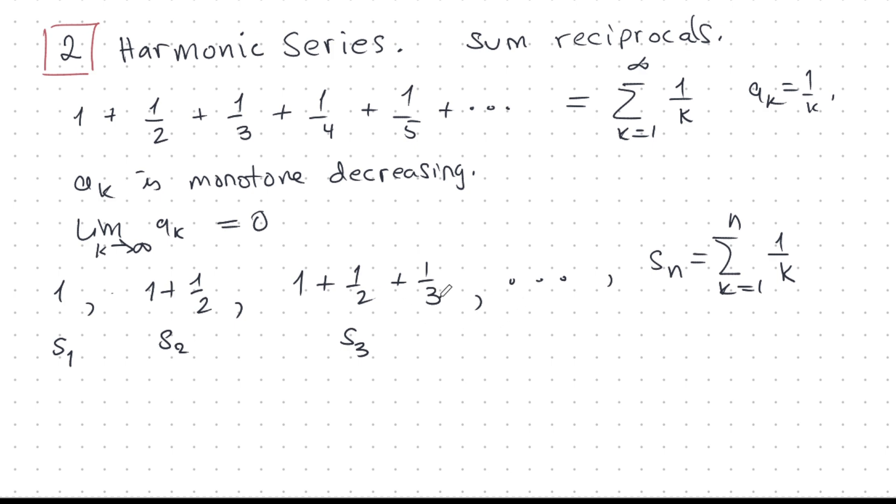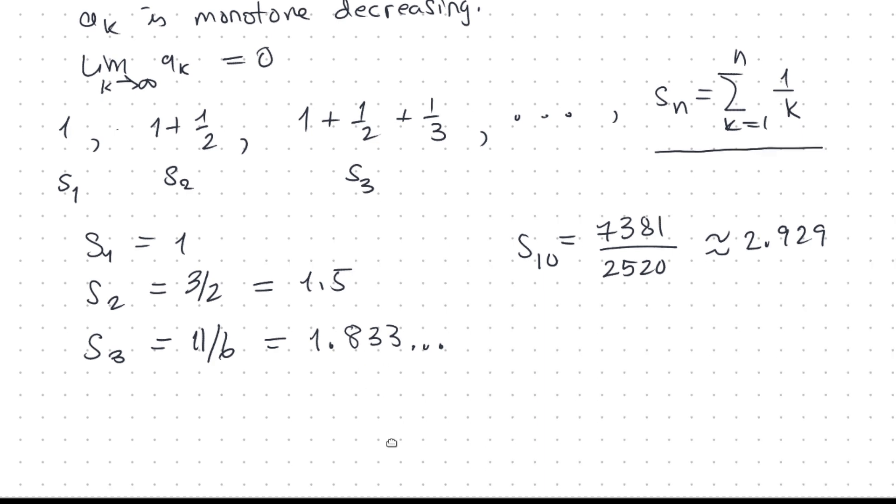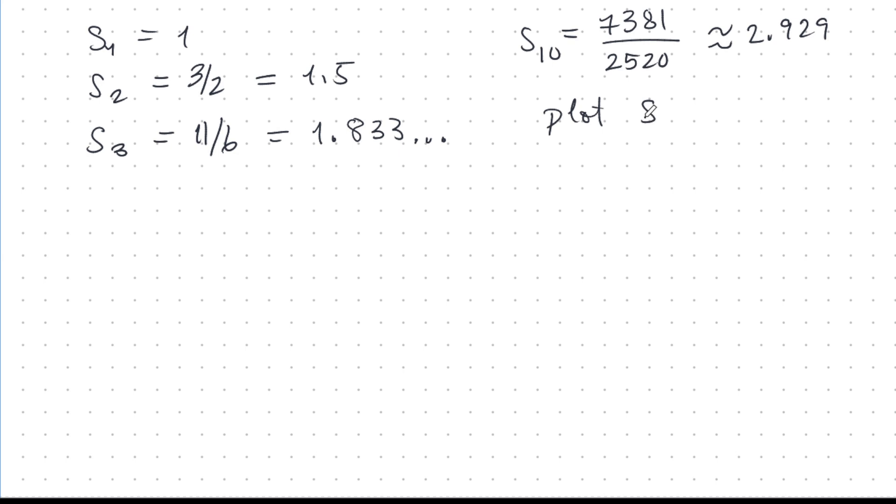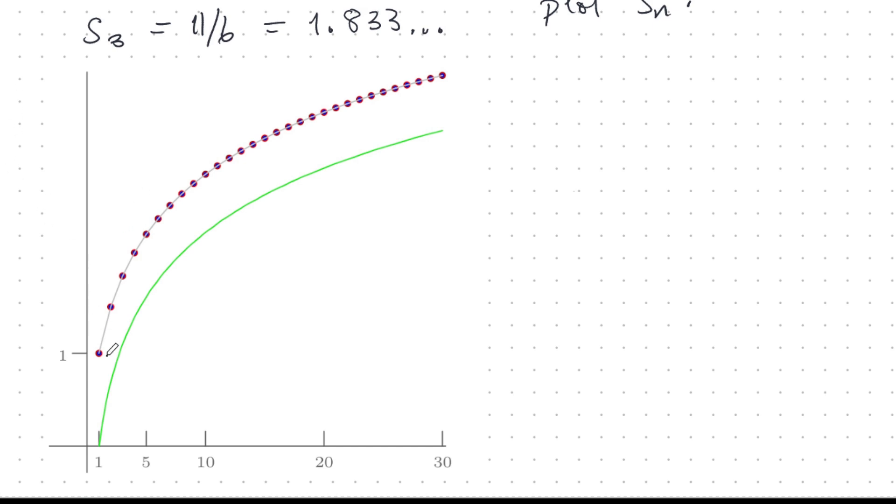1, 1 plus 1 half, 1 plus 1 half plus 1 third, and so on. And the nth partial sum is here like this. So let's compute some of these things numerically and see what it looks like. S1 is 1, S2 is 3 halves, S3 is 11 over 6. And you get this feeling that this is growing bigger. But let's see. Let's try S10. What does that give us? 7,381 over 2,520 or about 2.929. Perhaps we can plot this. Let's plot the S_n's, the partial sums. That's what it looks like. Let's have a closer look at this. So this here is S1. This is S2. This is S3 and so on. S_n up here. The red dots are the partial sums.